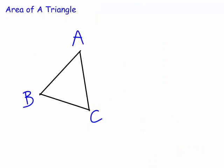Here we have a triangle ABC. It's non-right angled. We use a formula for this: Area equals a half ab sine C, or it's equal to a half bc sine A, or a half ac sine B.